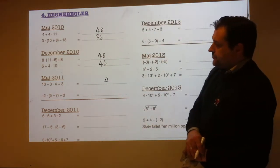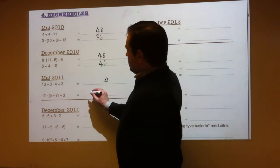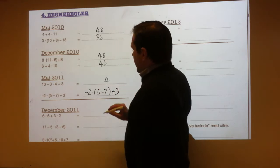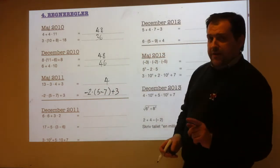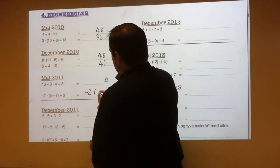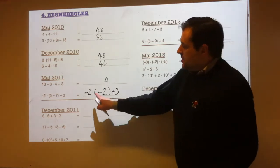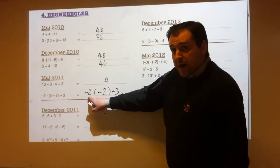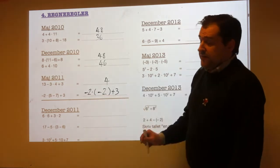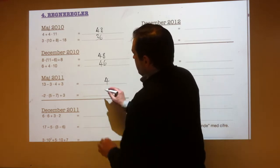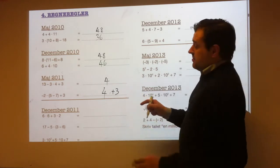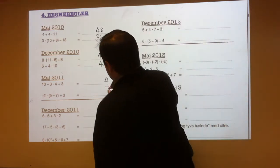13 minus 12 is 1, and then 1 plus 3 is 4. Next: minus 2 times (5 minus 7) plus 3. Brackets first: 5 minus 7 is minus 2. Multiplication next: minus 2 times minus 2. Minus times minus makes plus, so that's plus 4. So 4 plus 3 makes 7.